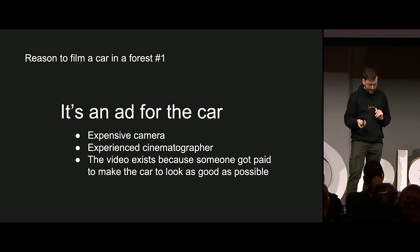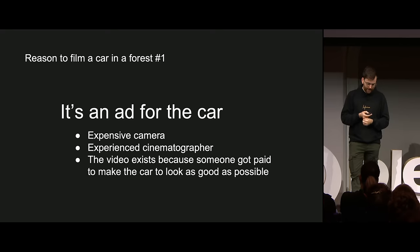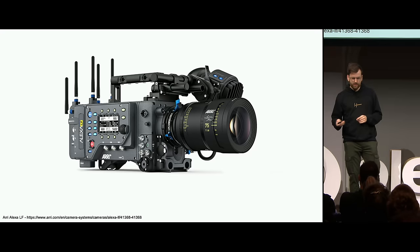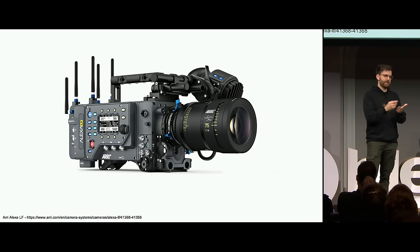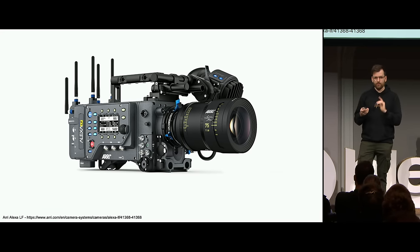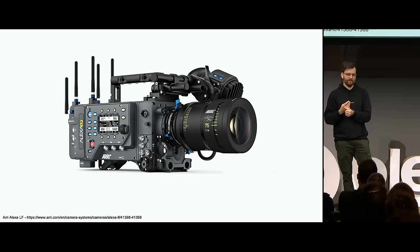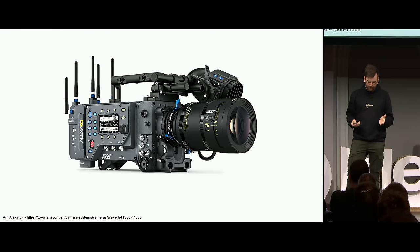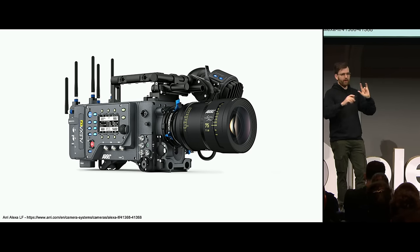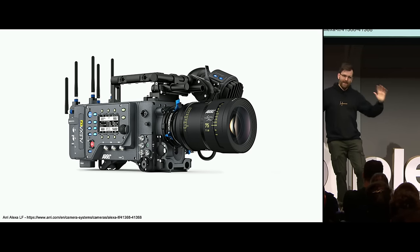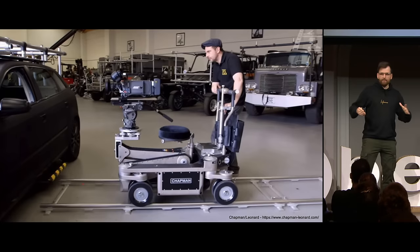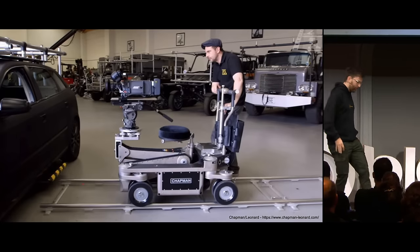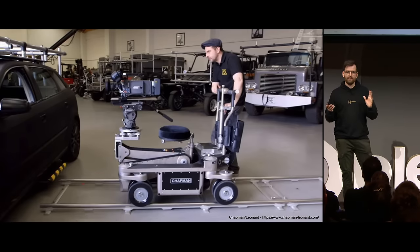So we're going to make a video that exists because someone got paid to make the car look as good as possible. We go to Google and search for an expensive camera - we get the Arri Alexa LF, for example. It has a beautiful large sensor, nice shallow depth of field, and a really high dynamic range. And then we have this beautiful lens. We don't want this camera shaking on an unstable gimbal - we want it heavy and moving slowly, so we're adding one of these heavy rigs on rails, which is almost difficult to mess up.